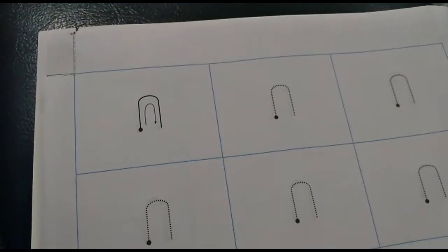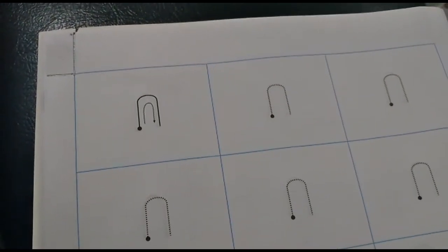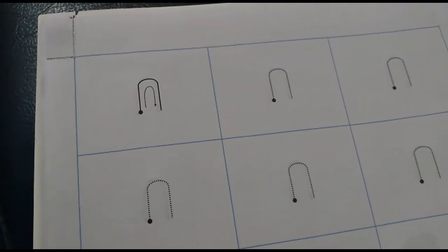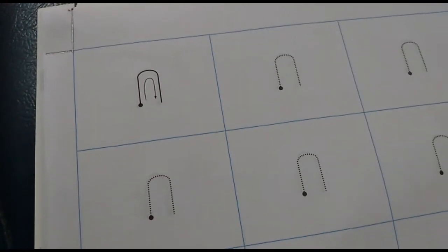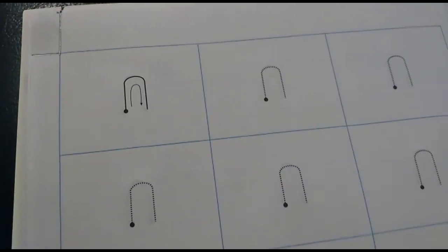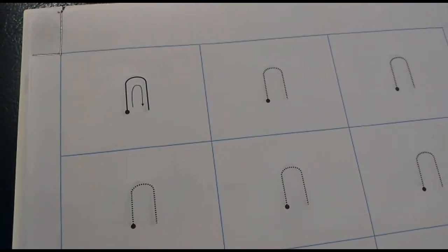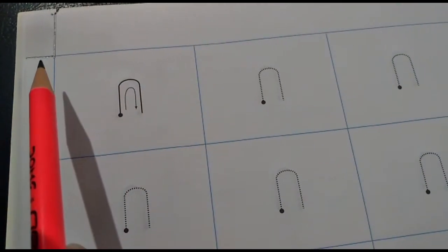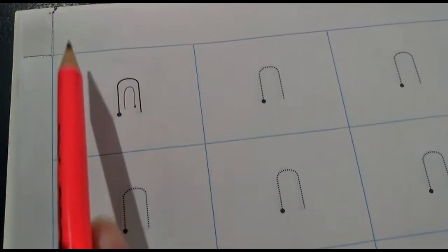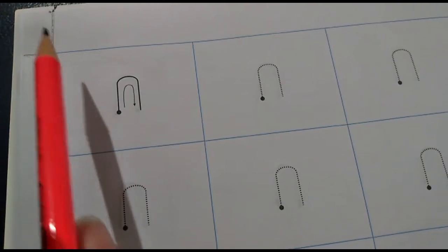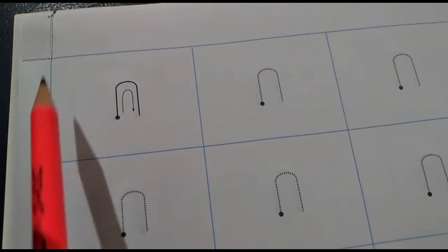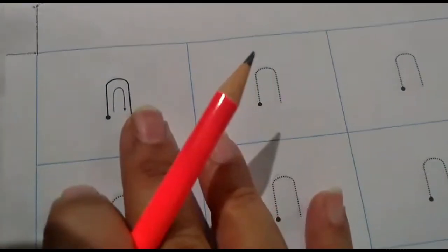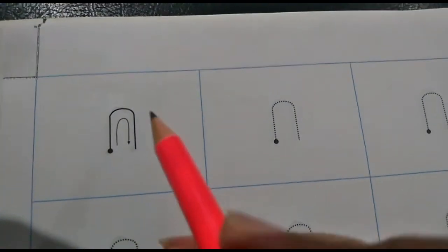Children, are we ready to learn how to write letter n? You're going to open your Pencil Time Strokes and Curves book and open to page number 13. Dear parents, kindly assist the child in opening the page. On the page, I have drawn a box. I would like you to write today's date where the box is drawn.